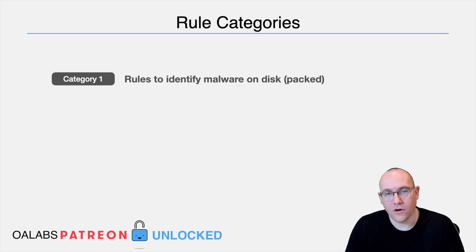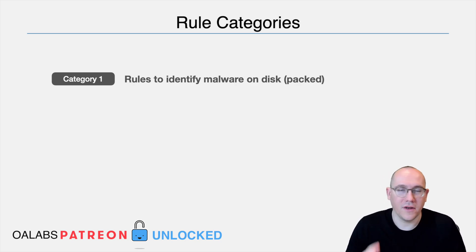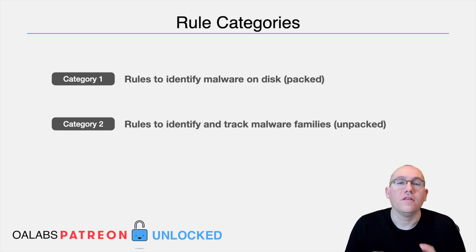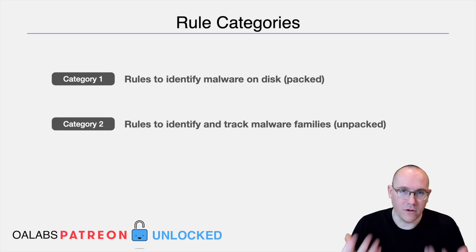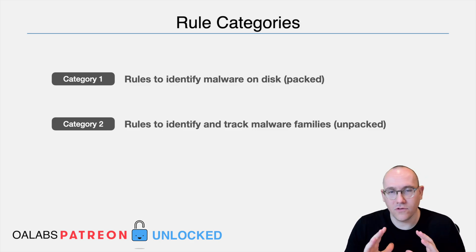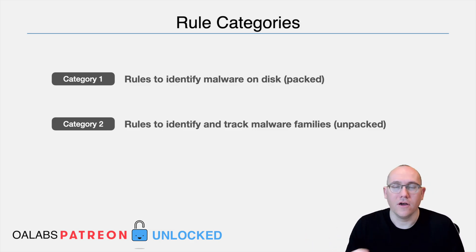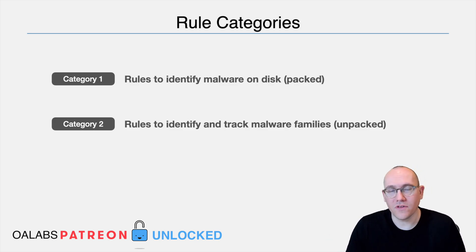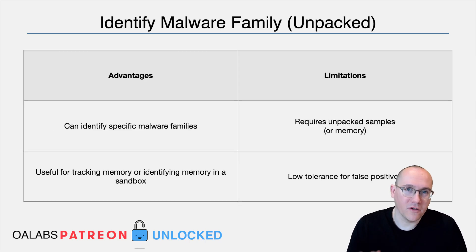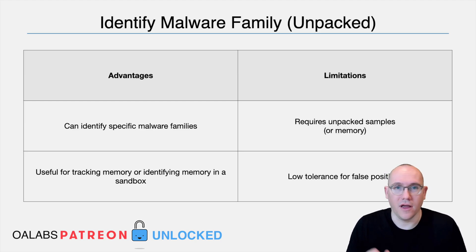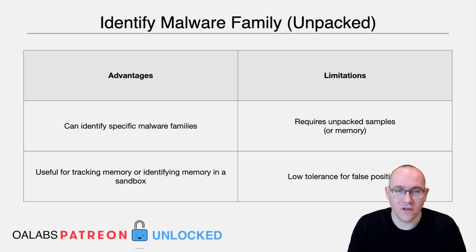The second category of YARA rule is one used to identify a specific malware family. These are the type of rules you've probably seen us write on stream, as this is what we are mainly focused on — what you would consider the threat intelligence side of YARA, where you're actually trying to identify specific malware families. These rules have some limitations: they usually must be applied on unpacked malware, so you want to target them at the malware once it has been unpacked.